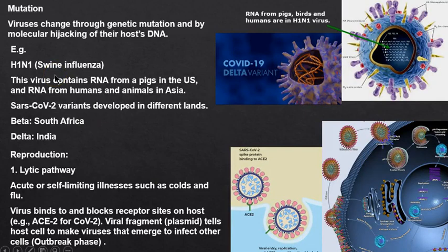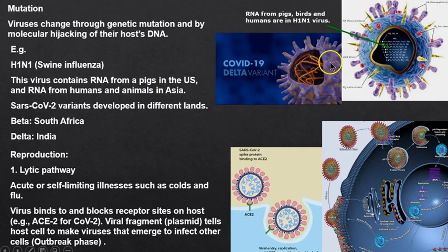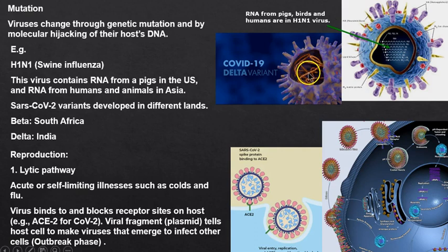Viruses can collect the DNA of whoever they infect. For example, H1N1 stole DNA from pigs, humans, and animals, so it has a combination of different genetic material — it's molecular hijacking of their hosts. The COVID-19 beta variant has some genes from South Africa.